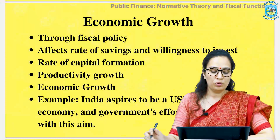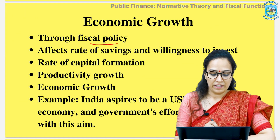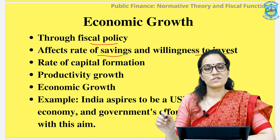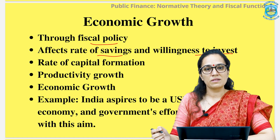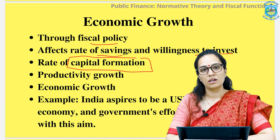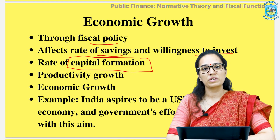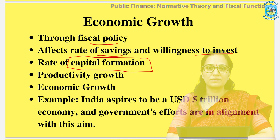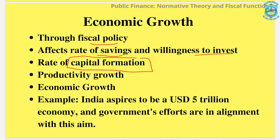The last function of the government is to ensure material well-being, that is economic growth. Through its fiscal policy, it intends to affect the level of savings and willingness to invest in the economy. Through these measures, it intends to alter capital formation in the economy, and capital formation is the crucial foundation to ensure economic growth. For example, presently the government's aim is to make India a USD 5 trillion economy, and all the schemes and policies are in alignment with that aim.